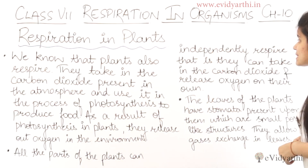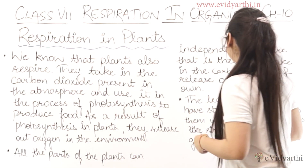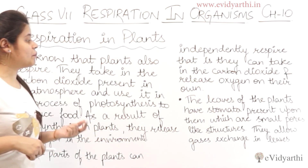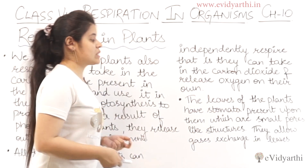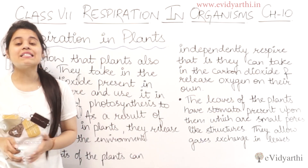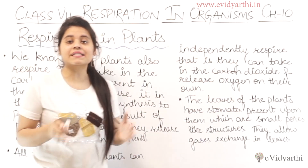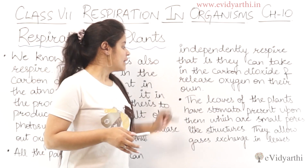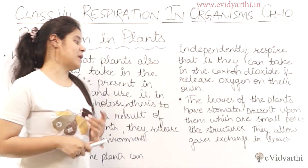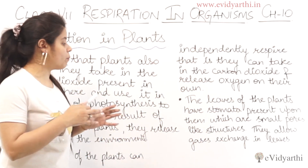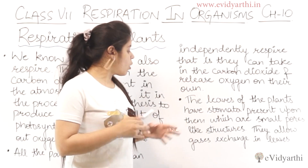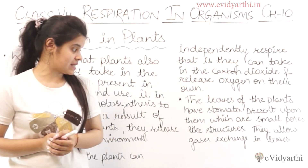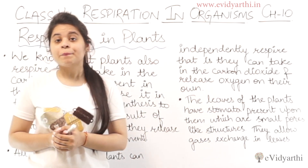All the parts of the plants can independently respire — that is, they can take in carbon dioxide and release oxygen on their own. The leaves of the plants have stomata present on them, which are small pore-like structures that allow gases to exchange in the leaves.